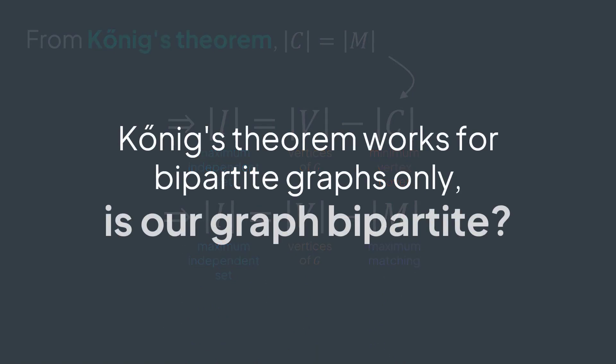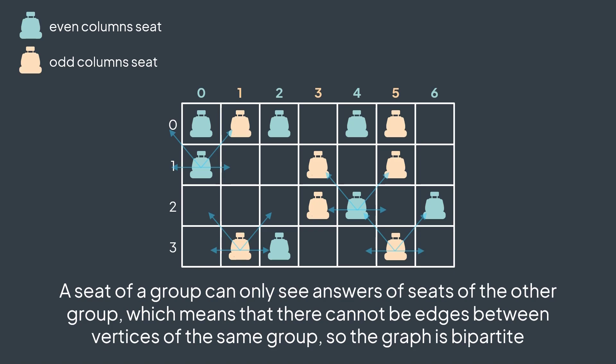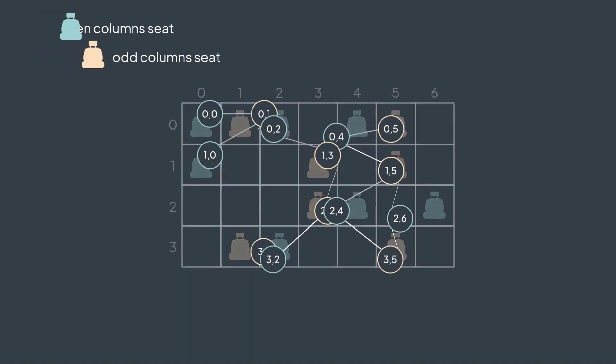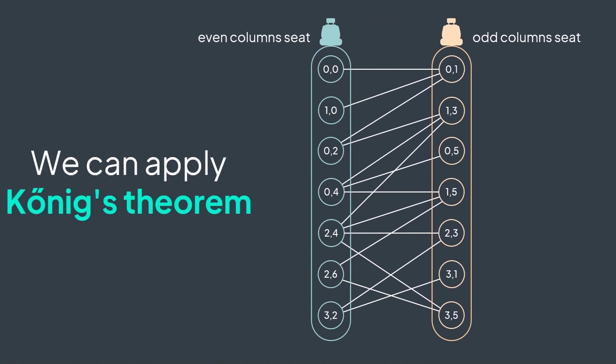But wait — König's theorem works on bipartite graphs only. Is our graph bipartite? The answer is yes. Let's split seats of our classroom into two groups: seats of even columns and seats of odd columns. From a seat, we can see answers of seats to the left or top left, or to the right or top right — basically in columns of the other group. An even column seat can see answers of seats from odd columns only, and vice versa. Which means that an edge can only occur between a vertex of the first group and a vertex of the second group, but never between two vertices of the same group. We deduce that our graph is bipartite, with the first group containing seats of even columns and the second group containing seats of odd columns. We can apply König's theorem.